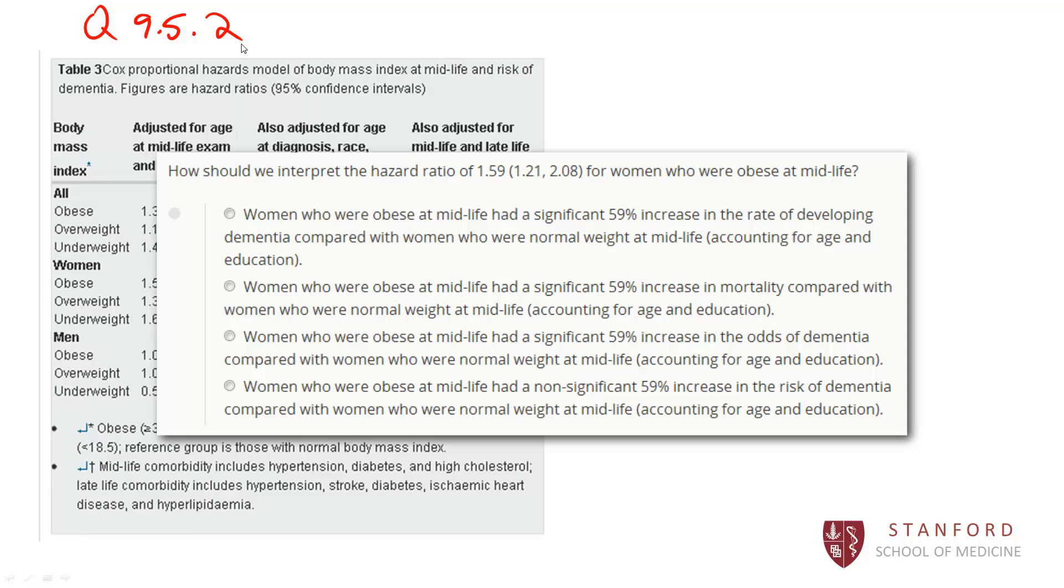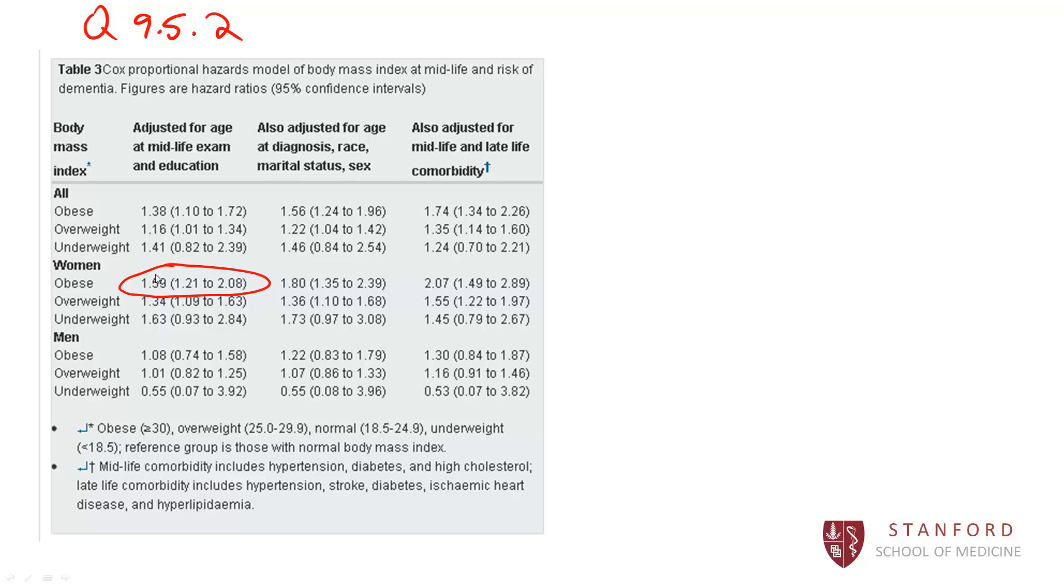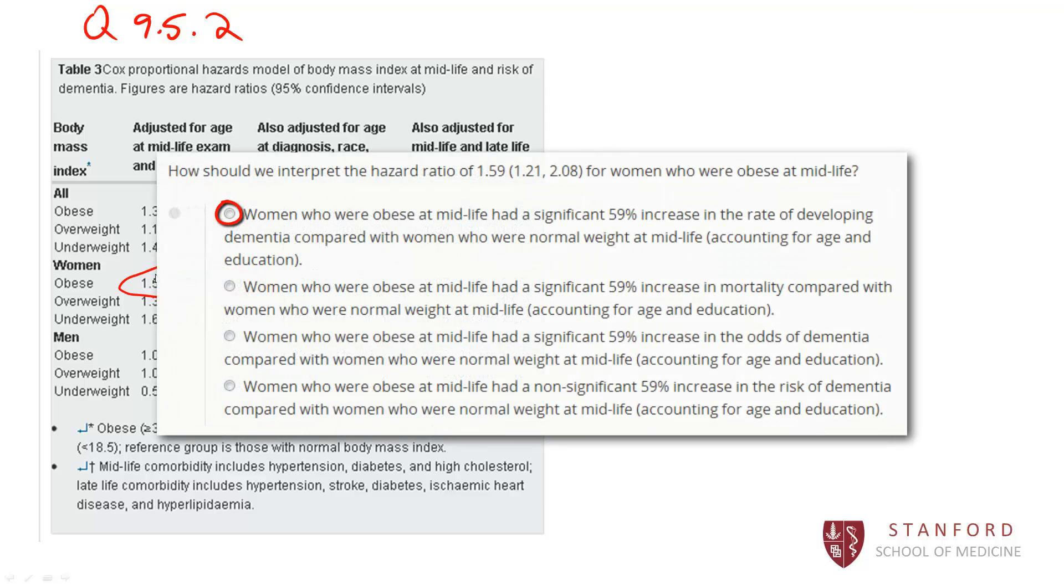So the correct answer here is A. We would interpret this odds ratio of 1.59. The reference group here is the normal weight women. This is the relative increase in the rate of dementia, of developing dementia. So women who were obese at midlife had a significant, and this is significant because it does not cross 1.0, the 95% confidence interval does not cross 1.0. So it's a significant 59% increase in the rate of developing dementia compared with women who were normal weight at midlife. And it is adjusted for age and education. So A is correct.